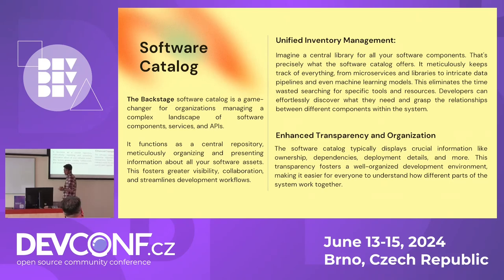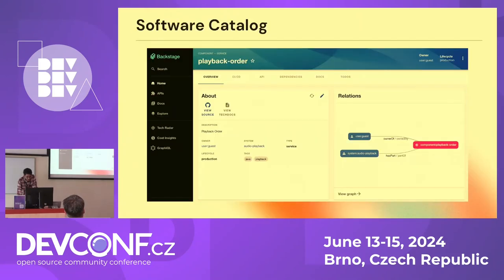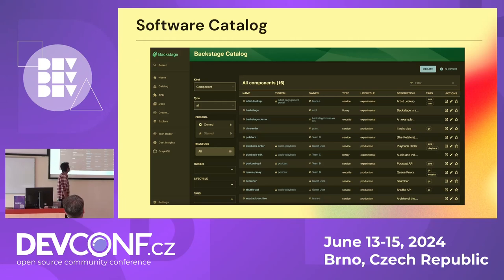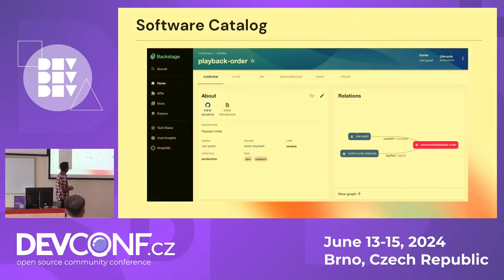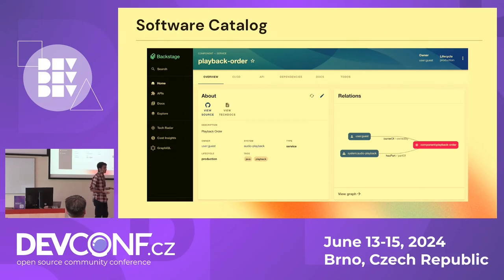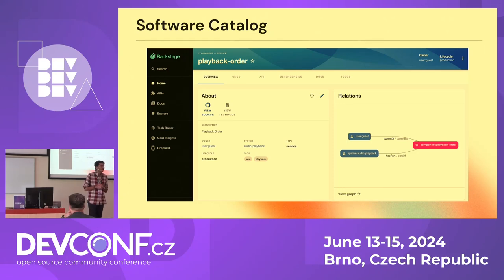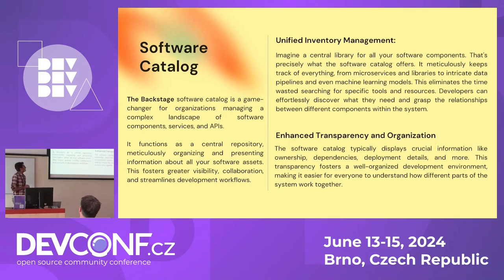The software catalog lists all your services and components. If you click on one — say 'Playback Order,' which is a service — you can see source code, TechDocs, CI information, API details, dependencies, docs, to-dos, the owner, maintainer, and contributor, all in one place. If you have a thousand services in your organization, you can't go to every team asking for everything. A single catalog saves significant time and effort.